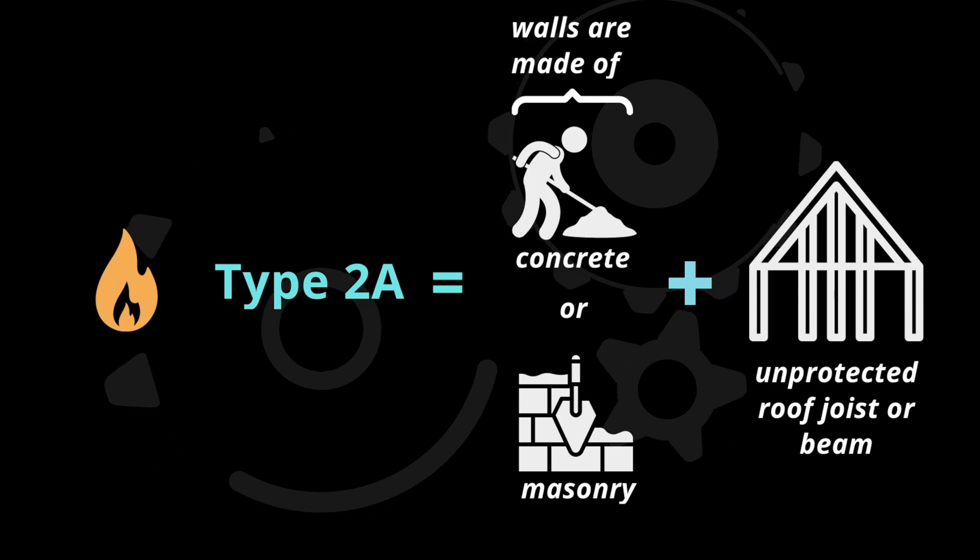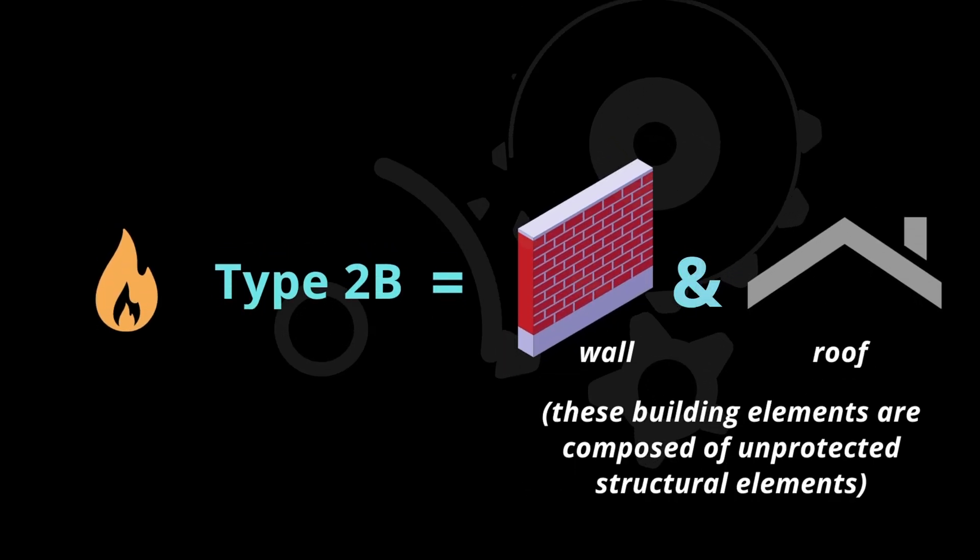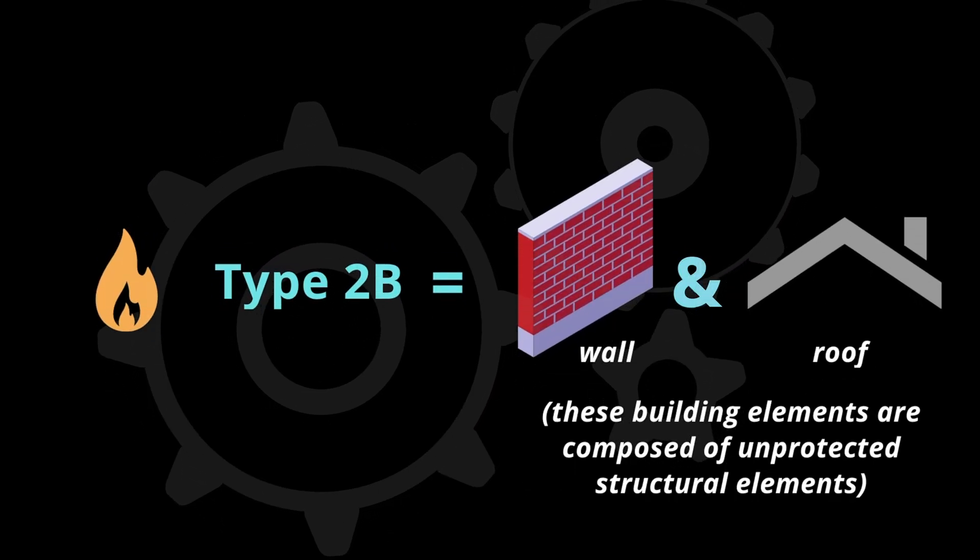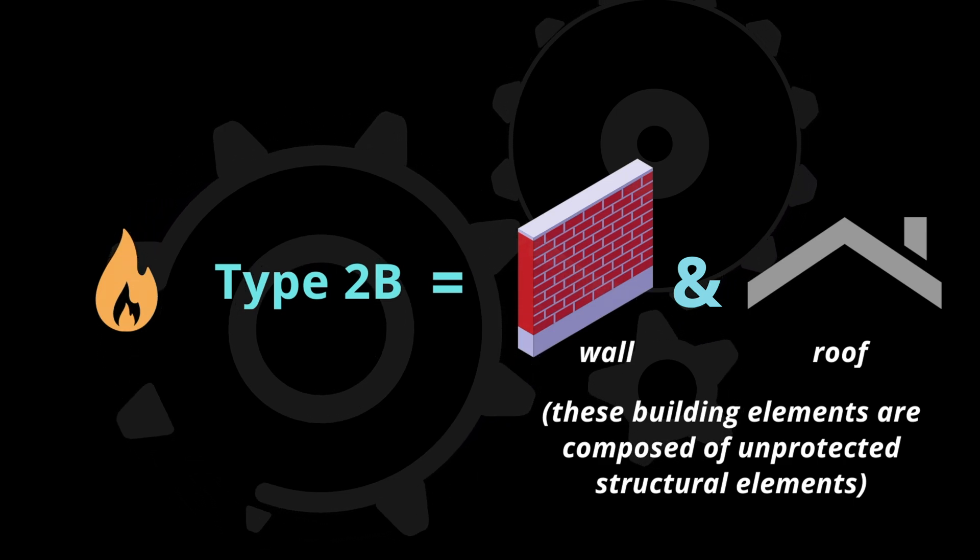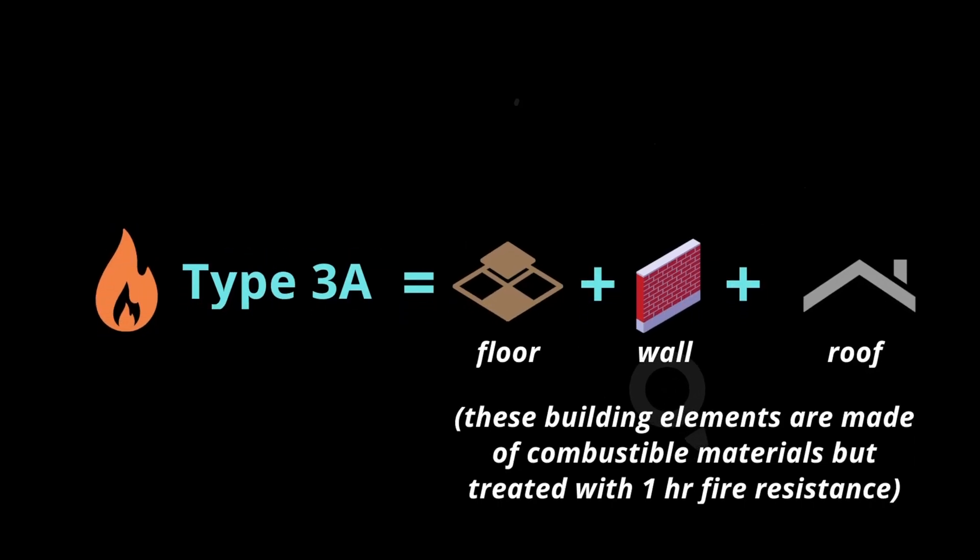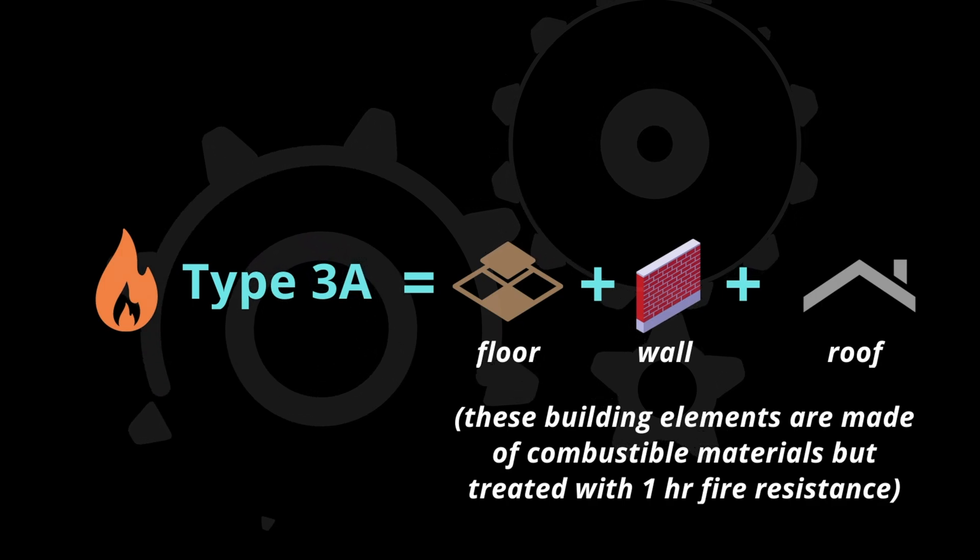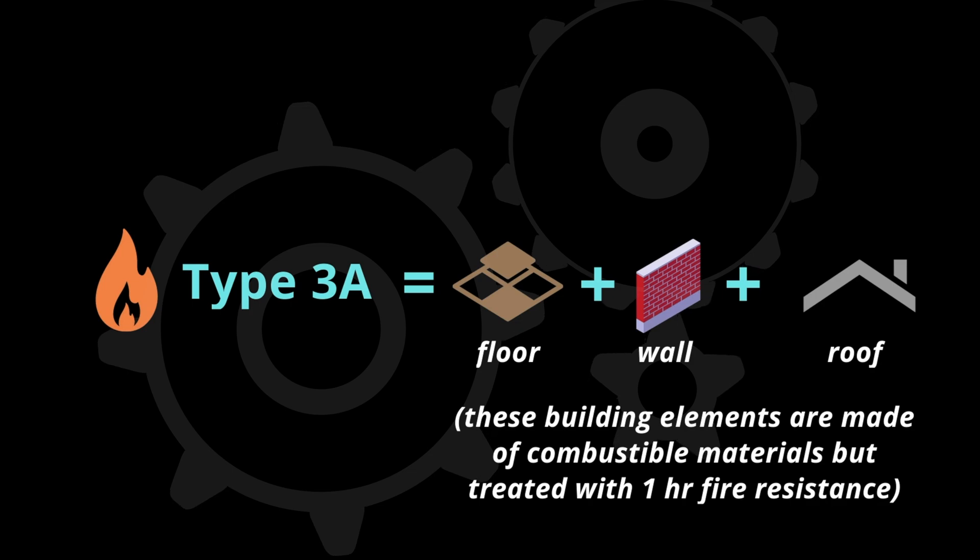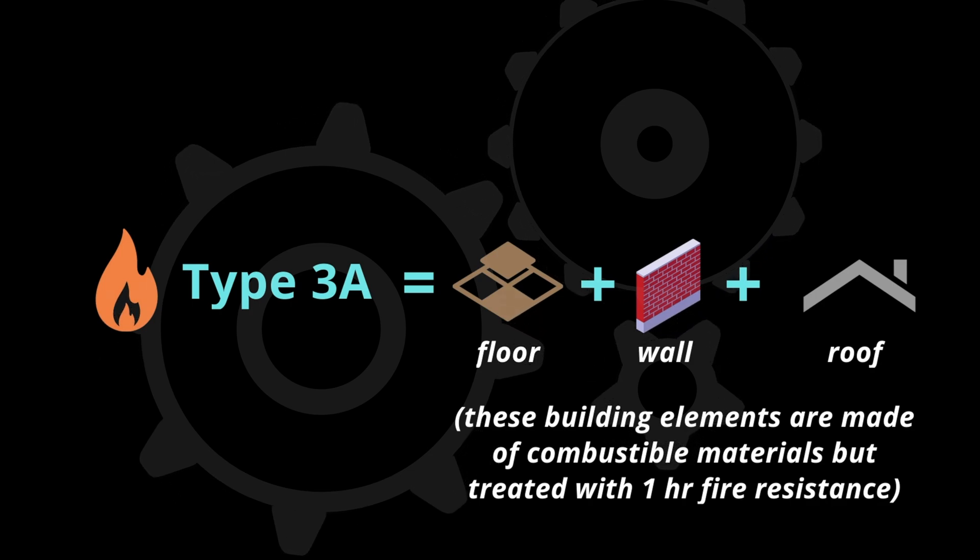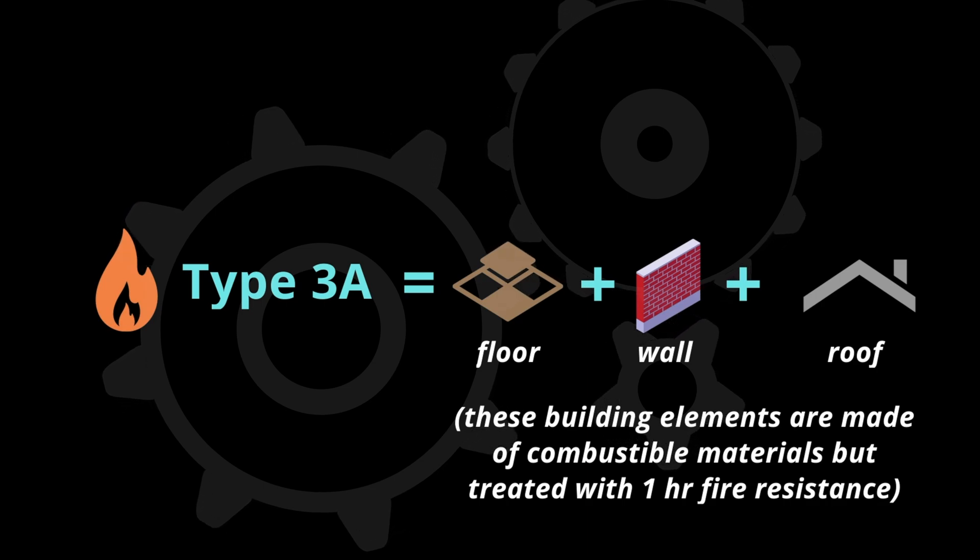On Type 2B, the walls and roofs are composed of unprotected or uninsulated structural elements. The construction types from 3A onwards are made of combustible materials. These types can catch fire and can burn quickly. Type 3A comprises of floors, walls, and roofs that are combustible but are treated with one-hour fire resistance.